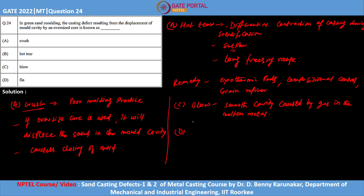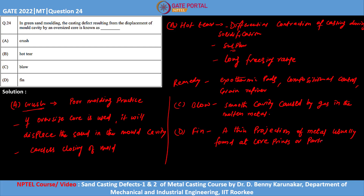Option D is fin. Fin is basically a thin projection of metal usually found at the core print or parting line. If fins are present in excess, they may result in small shrinkage cavities. If the amount of fin present is too much, it will lead to a local small shrinkage cavity or run out.